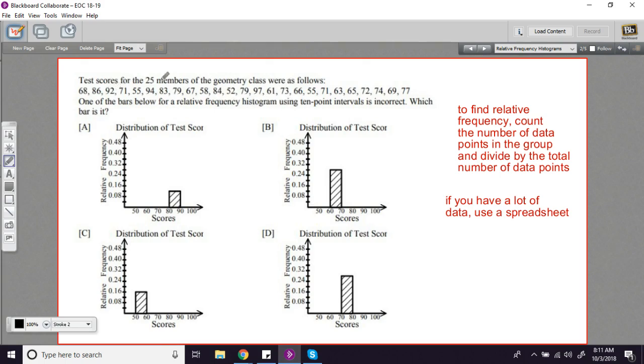This is a set of test scores from a geometry class, so you could see what grades people are getting, how many A's, how many B's, et cetera, on a traditional grading scale. So that's a histogram, a frequency histogram.